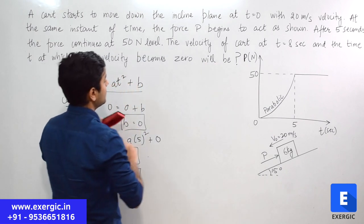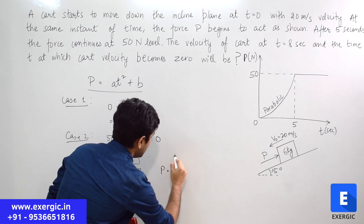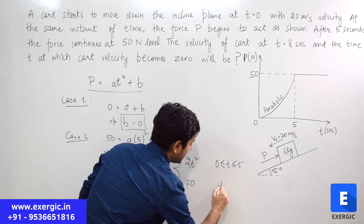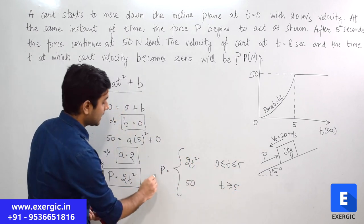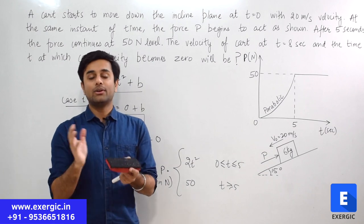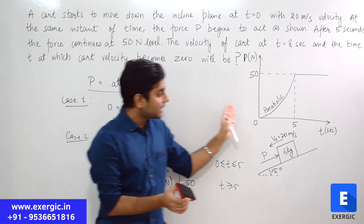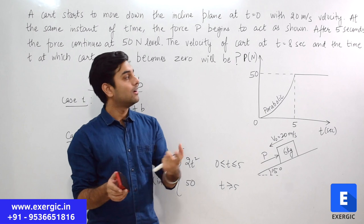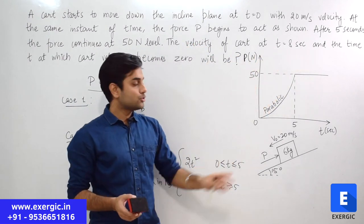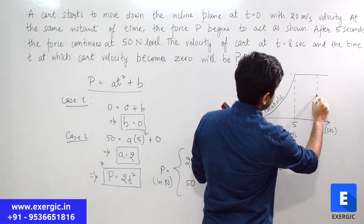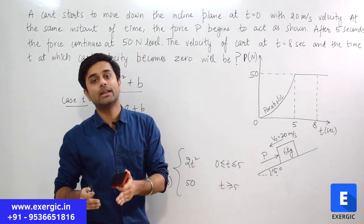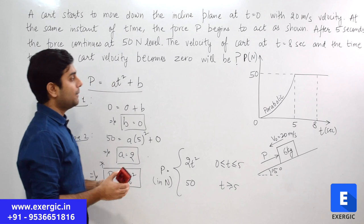So we can write that P equals 2T² when T is from 0 to 5 seconds, and P equals 50 Newton when T is more than 5 seconds. We now know the expression of P with respect to T. Let us apply the impulse-momentum equation for the entire motion from 0 up to 8 seconds, because the first part of the question asks us to find the velocity of the cart at T equal to 8 seconds.